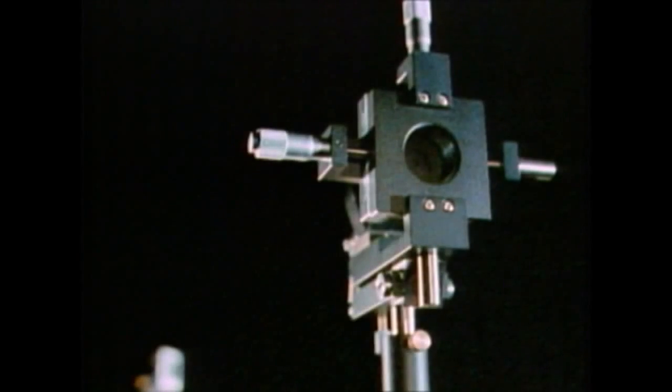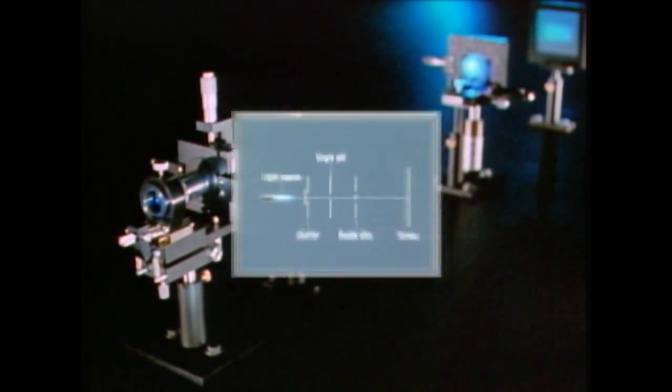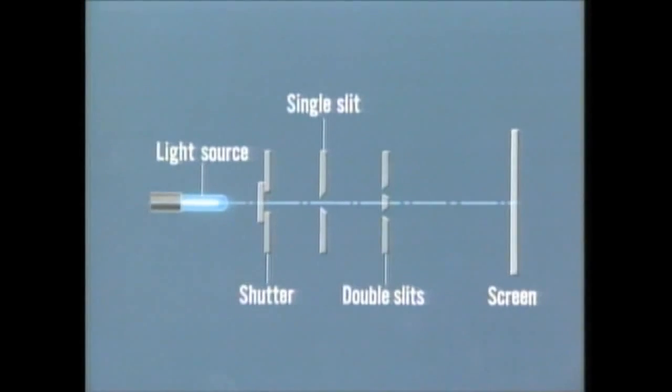If light has wave properties, we should be able to observe the same phenomenon. Let's run an experiment to find out. Here we use double slits to divide the light into two separate beams. Let's look at the behavior of the light after it passes through the slits.